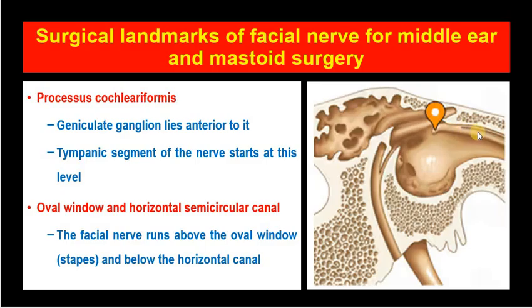You can see here the tensor tympani tendon. The facial nerve starts at the first genu and continues as the tympanic segment. The tympanic segment means the segment of the facial nerve that lies above or in the middle ear cavity. 'Tympanum' means middle ear — many students are confused between the tympanic membrane and the tympanum. 'Myringus' refers to the tympanic membrane, whereas 'tympanic' refers to the middle ear cavity. Therefore, the tympanic segment of the facial nerve is the segment that lies in or above the middle ear cavity.